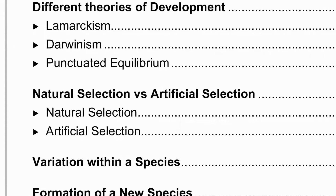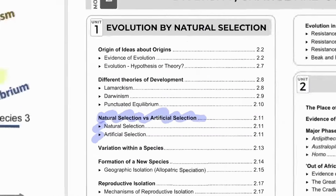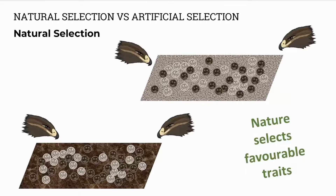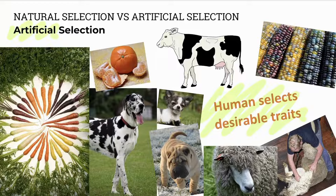Then we'll have a look at the differences between natural selection and artificial selection. Natural selection is the mechanism of evolution, where nature determines what are the favorable characteristics and which organism will live or die. On the other hand, artificial selection is where humans determine the desirable traits — whether it's seedless fruit or cows that produce a lot of milk, the breeder or farmer determines what are the favorable characteristics.